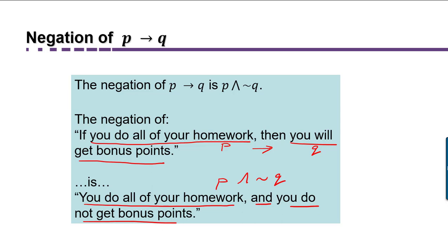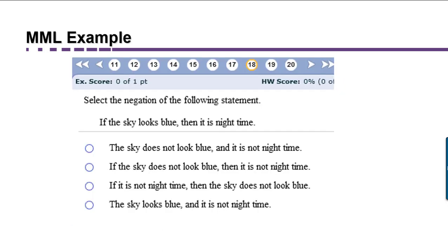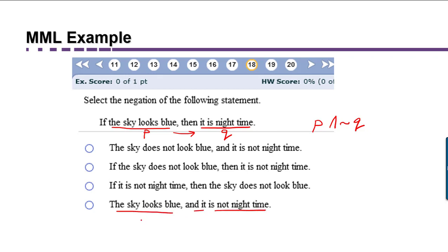Let's apply this to another sentence — a question directly out of our MyMathLab homework. It says: select a negation of the following statement: 'If the sky looks blue, then it is nighttime.' So the component P is 'the sky looks blue,' and the component Q is 'it is nighttime.' This is a conditional statement joined by if-then. We know that its negation is going to be P happens and Q doesn't happen — the promise is made and then broken. So we're looking for 'the sky looks blue and it is not nighttime.'